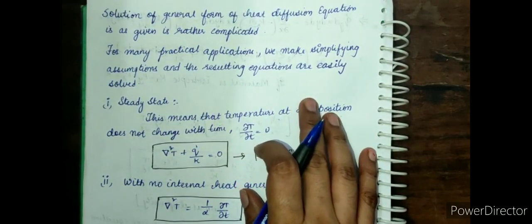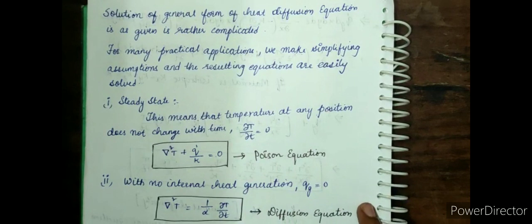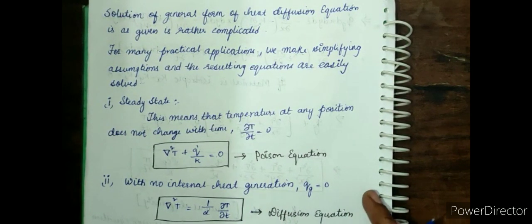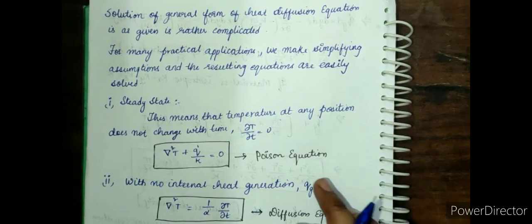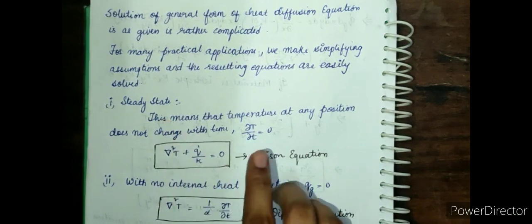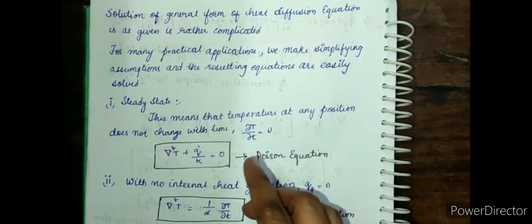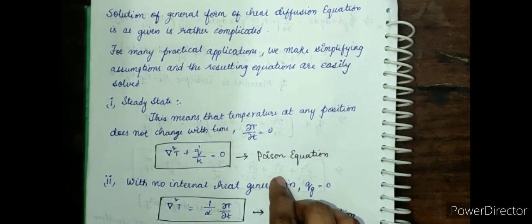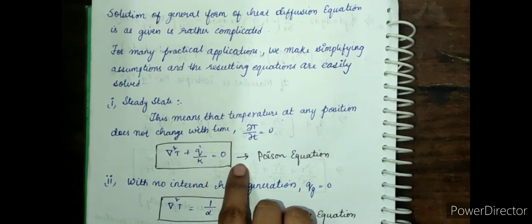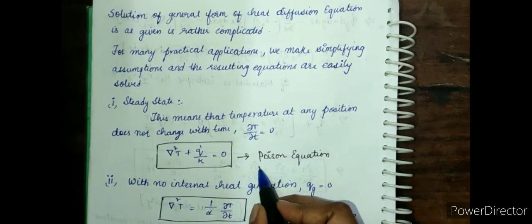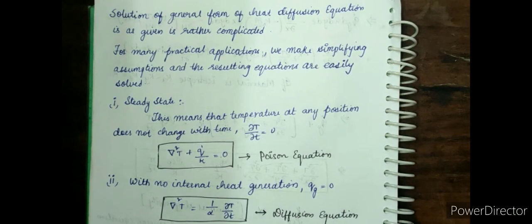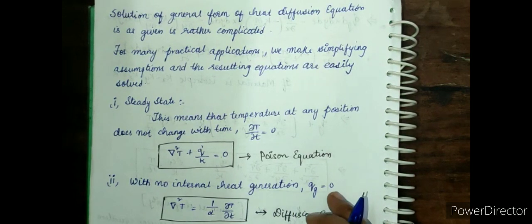The solution of this general equation is a little complicated, so we simplify it using assumptions. The first assumption is steady state, where temperature does not change with time — ∂T/∂t = 0. Therefore the equation reduces to: ∇²T + qg/k = 0. This equation is called Poisson's equation — for steady state with heat generation and constant thermal conductivity.